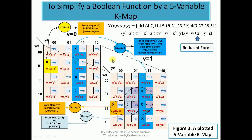These two groups of four are in overlapping positions — both in the third column of their respective maps — so they combine to form Group 1 of eight max terms. In reduced POS form, since this group spans all rows, the WX variable is eliminated, and YZ is fixed to 11. So the reduced form for Group 1 is (Y̅+Z̅), written directly from both maps.